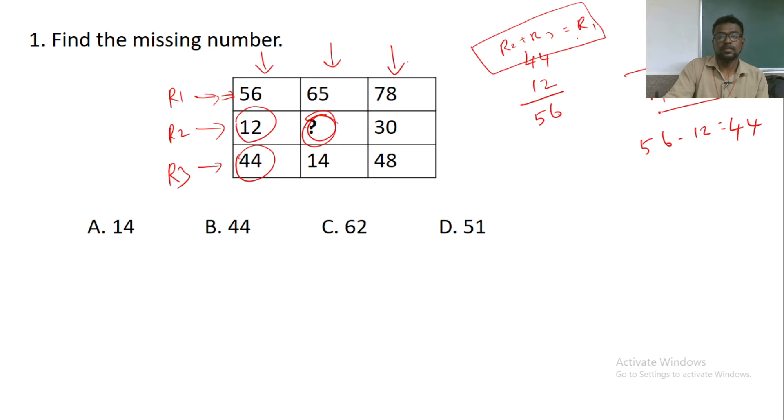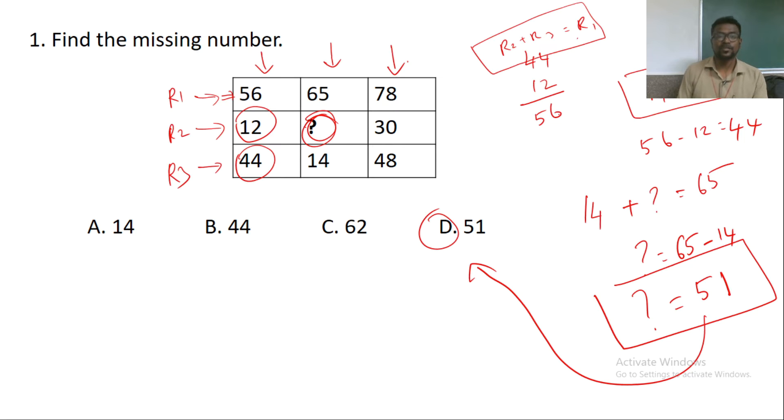So to find this question mark what we are supposed to do is follow this pattern. Which is nothing but 14 plus question mark is equal to 65, which means question mark is equal to 65 minus 14, in the sense 5 minus 4 is 1 and 6 minus 1 is 5, and the question mark will be replaced by the number 51. This number is in option D. So the correct answer for this question is option D.